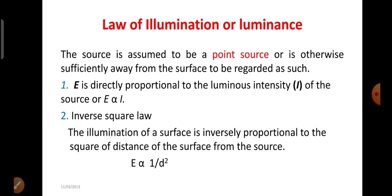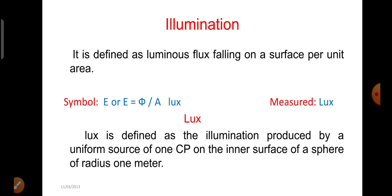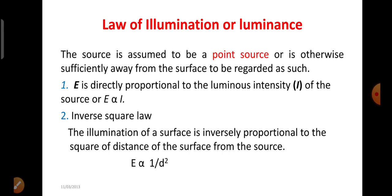Now we will move to the laws of illumination. Here, the source is assumed as a point source. The first point is that illumination is directly proportional to the luminous intensity I of the source — that is, E is directly proportional to I. Inverse square law: the illumination of a surface is inversely proportional to the square of the distance of the surface from the source — that is, E is directly proportional to 1 by d squared.